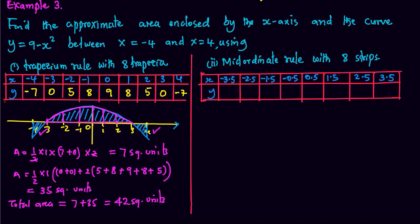In case we are to use mid-ordinate rule with 8 strips, we'll have our diagram, which we have drawn, same diagram, but in this case we are interested in the lengths of the mid-ordinates. So we have the mid-ordinates at negative 3.5.